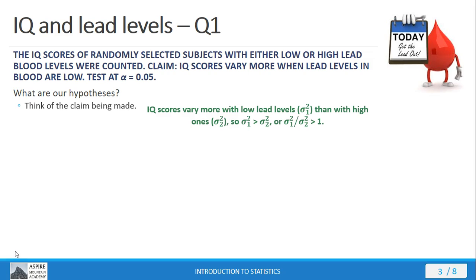The first population variance is going to be greater than the second population variance, which is the same thing as saying that this ratio is going to be greater than one.